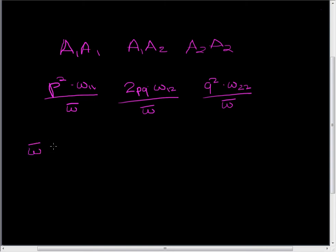So the average omega, this is our average fitness. And it's just going to be the frequencies of our genotypes times their fitness. So it's the relative contribution that each of these genotypes gives to the population.